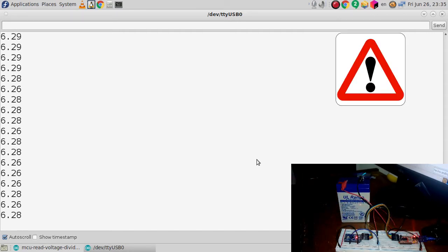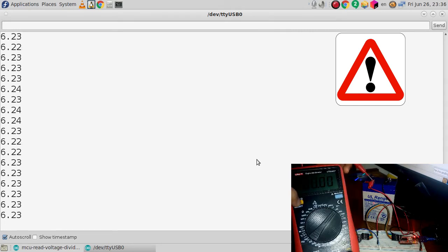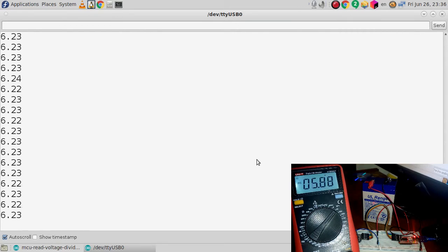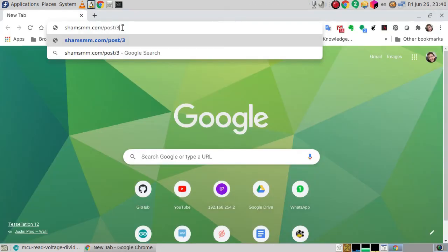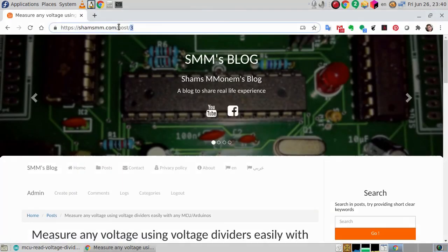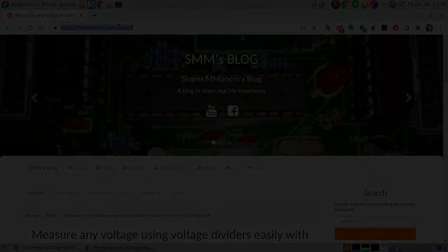There's one more important thing: never disconnect the resistor connected to ground, because if you do, the 6 volts will go directly to the Arduino without passing through the voltage divider. This is the end of this video. I hope you enjoyed it. You can visit my blog post—the link is in the description below. Thanks for watching and see you next time.